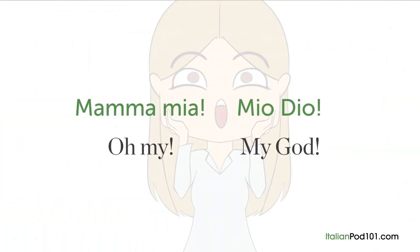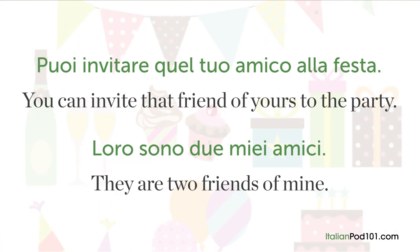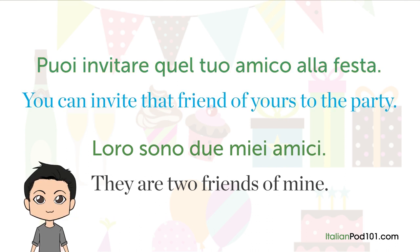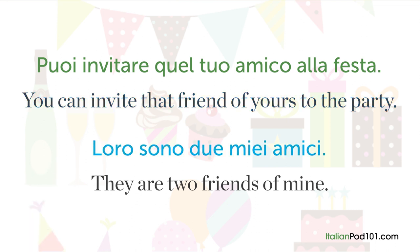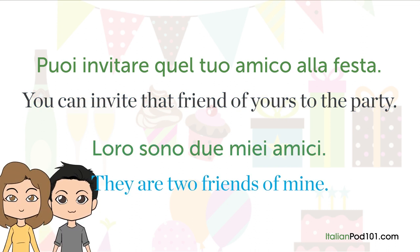Another case when Italian possessives don't need the article is when the possessive is after the noun or in idiomatic expressions: 'mamma mia' — oh my; 'mio dio' — my god. Lastly, you don't need the article if the noun is already introduced by an indefinite adjective or a number. For example: 'Puoi invitare quel tuo amico alla festa' — you can invite that friend of yours to the party; 'Loro sono due miei amici' — they are two friends of mine.